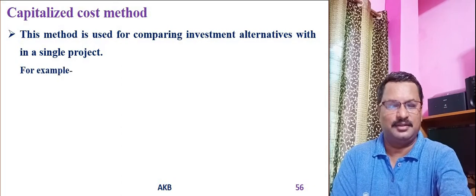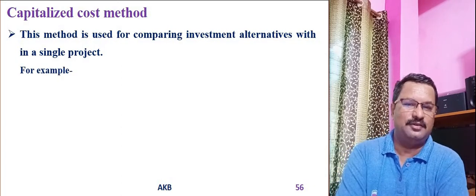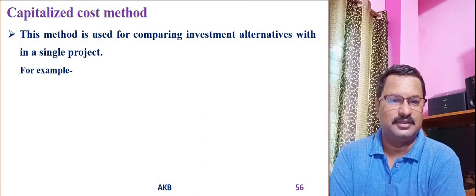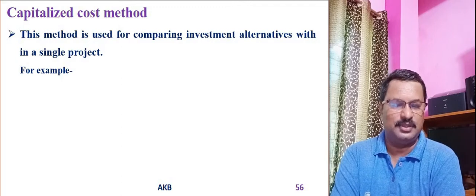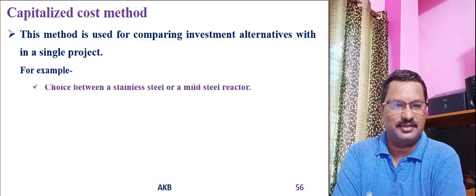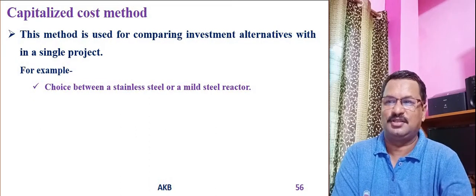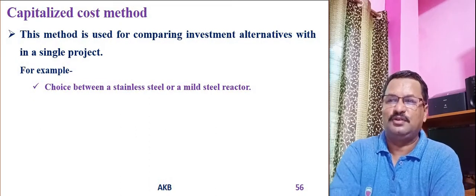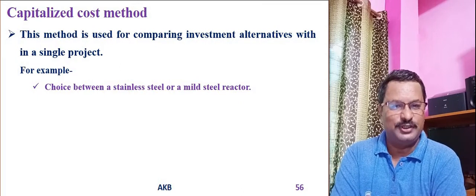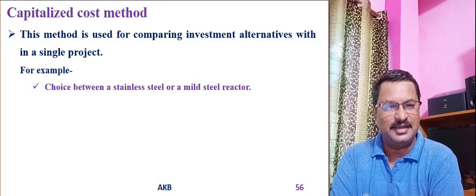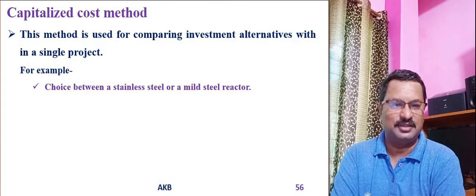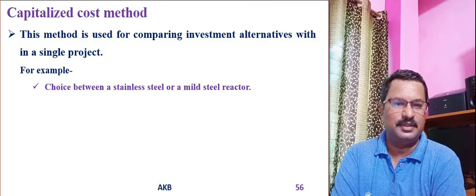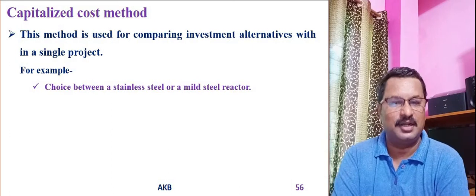For example, in a chemical plant, if you want to have a reactor in the plant, the options available could be a stainless steel reactor or a mild steel reactor. You have to decide whether to invest money in a stainless steel reactor or a mild steel reactor. To compare these two options, you can use the method of Capitalized Cost.